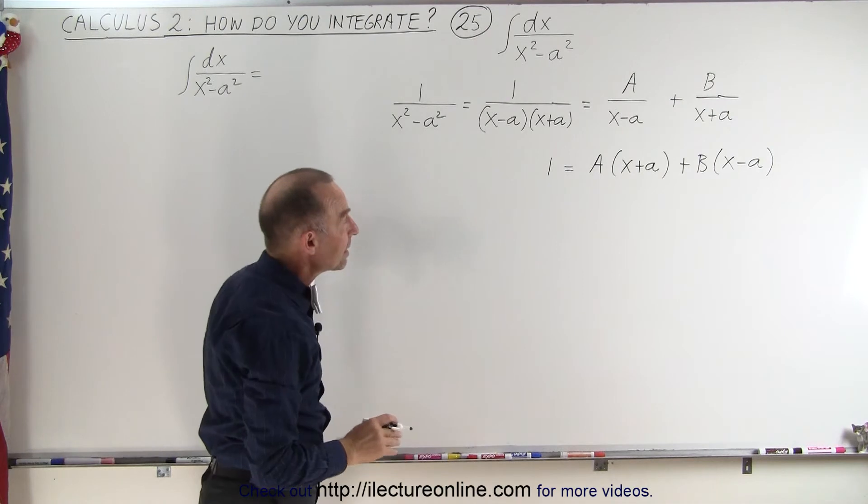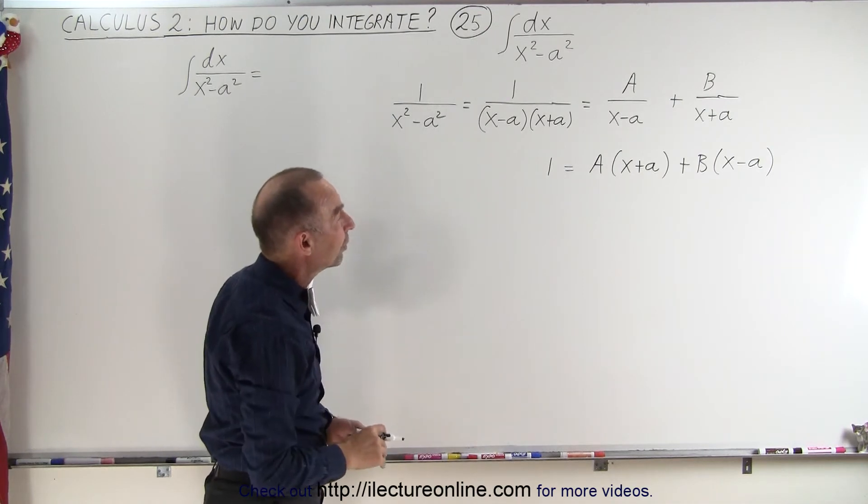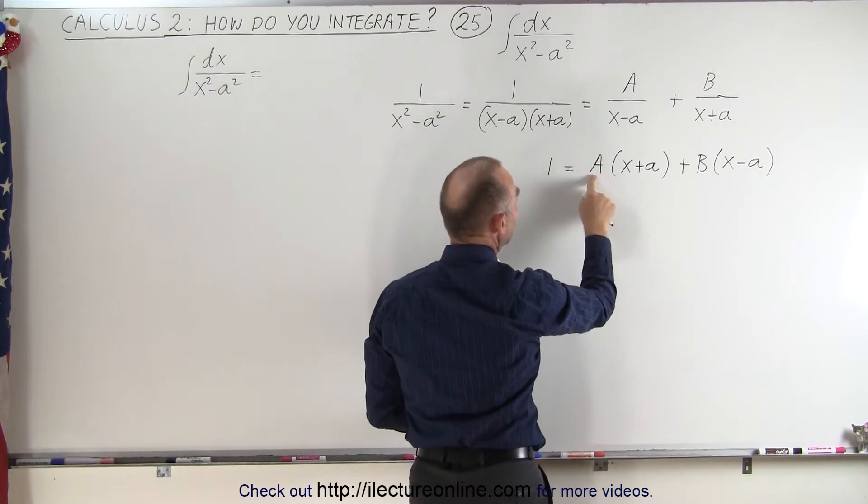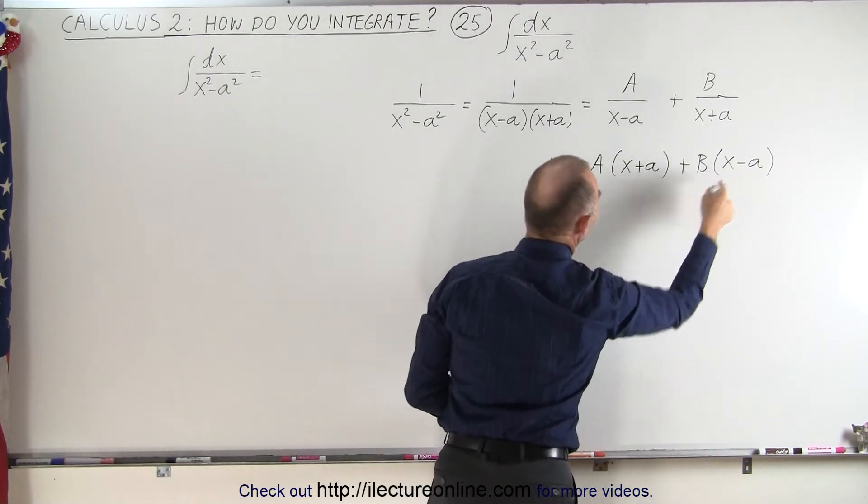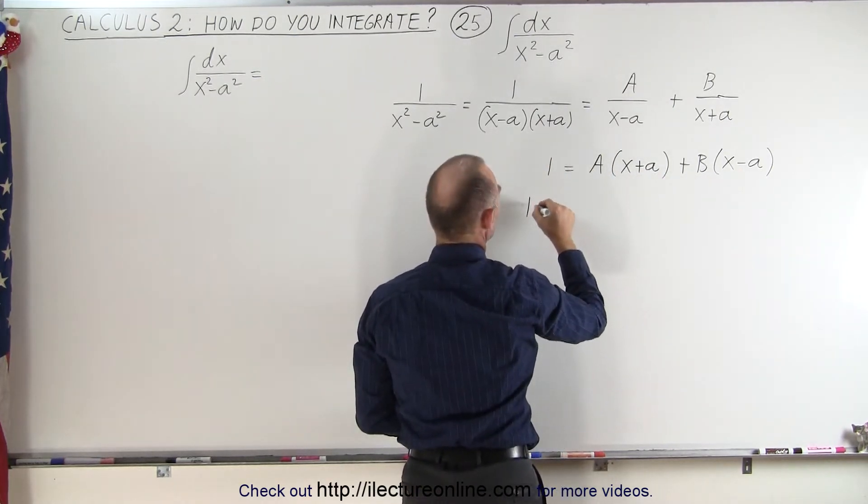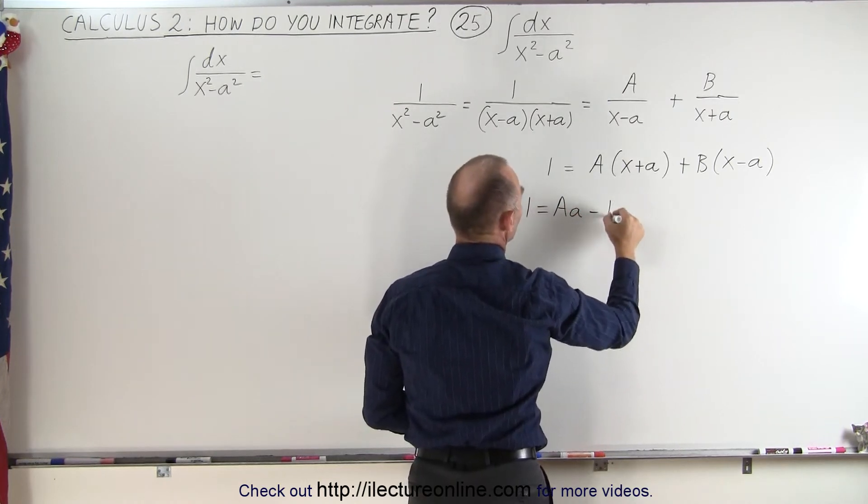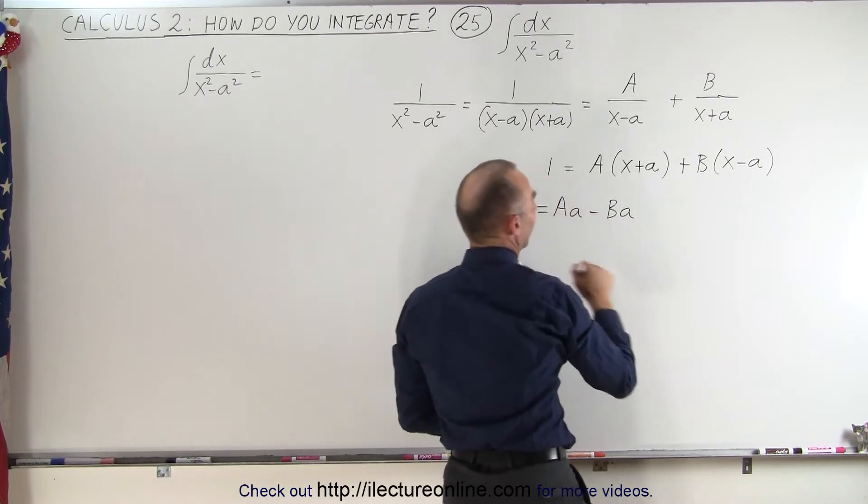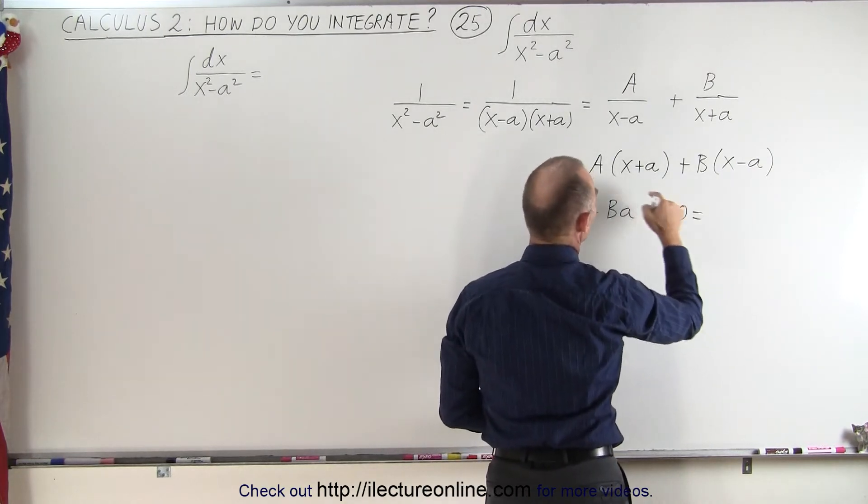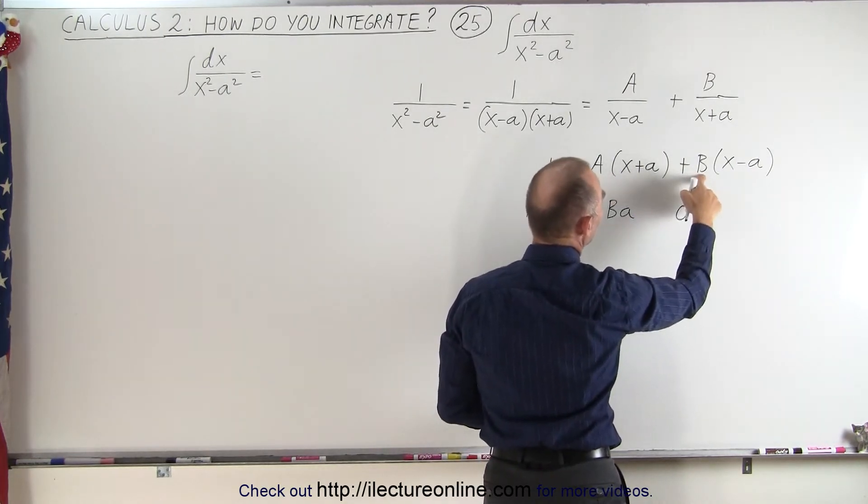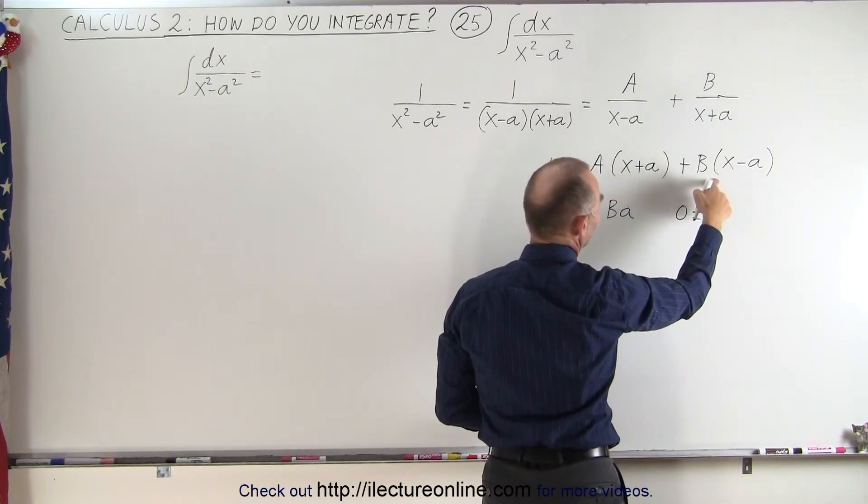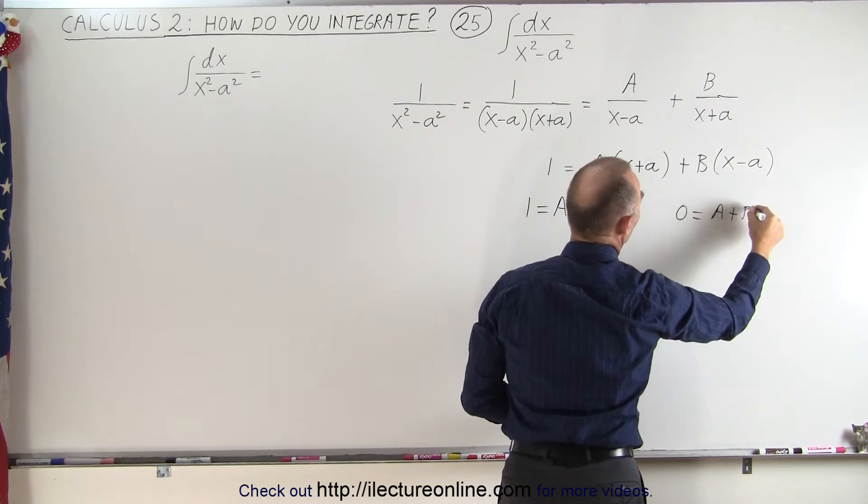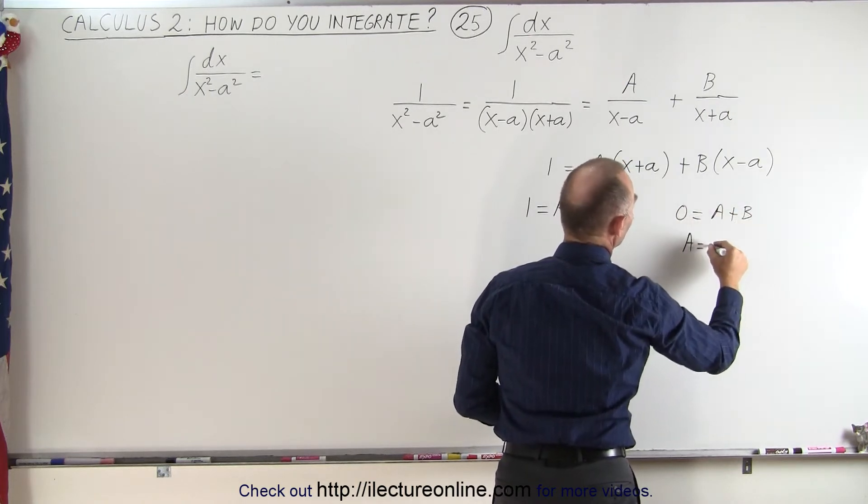And now we take a look at the equation here. On the left side, we have a constant 1, which must be equal to A times a plus B times the negative a. So we can say that 1 equals A times a minus B times a. And since there's no x on the left side, we can say that 0 is equal to A plus B, because we have Ax plus Bx on the right side. So A plus B must equal 0, which means that A must equal negative B.